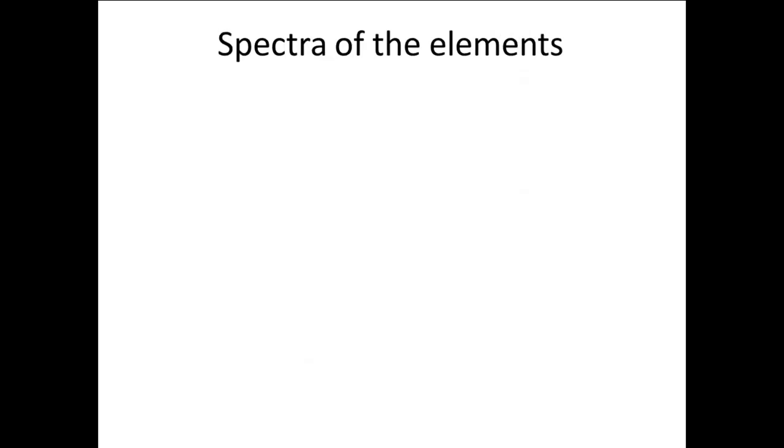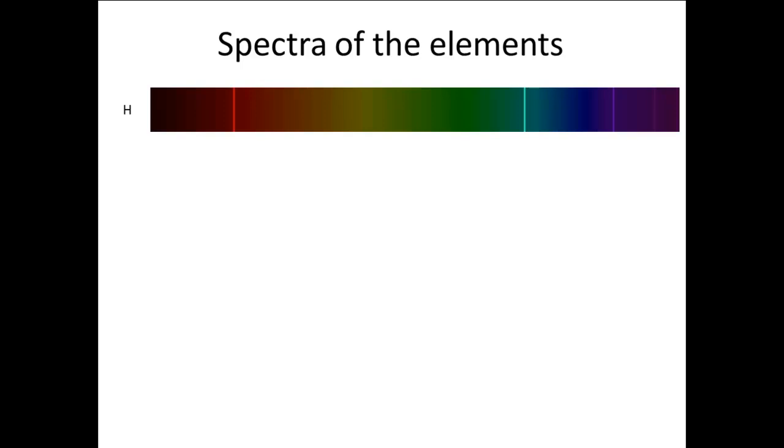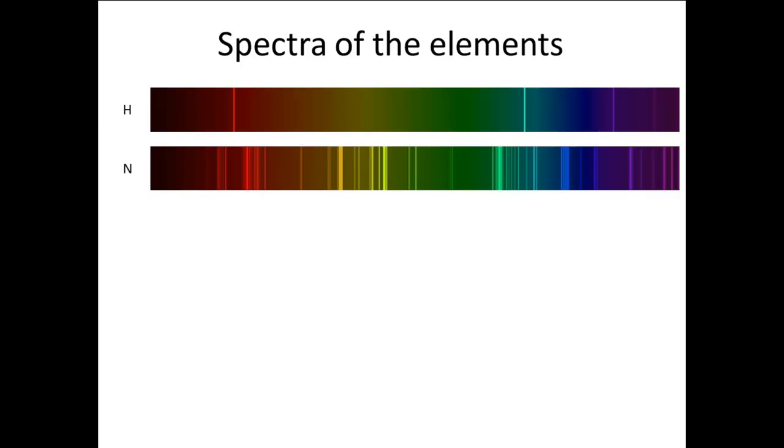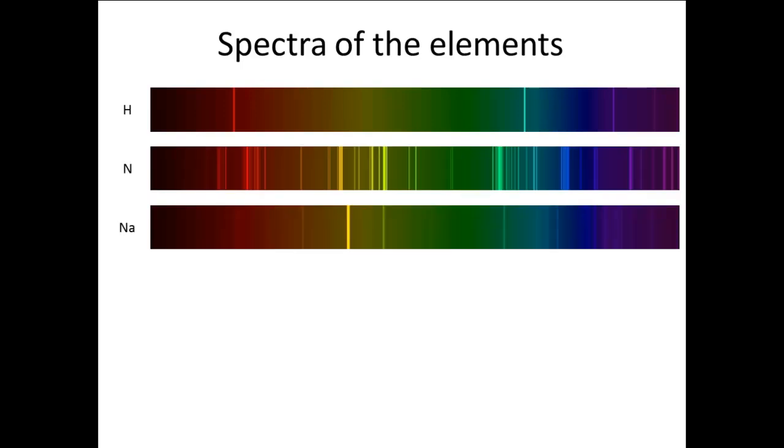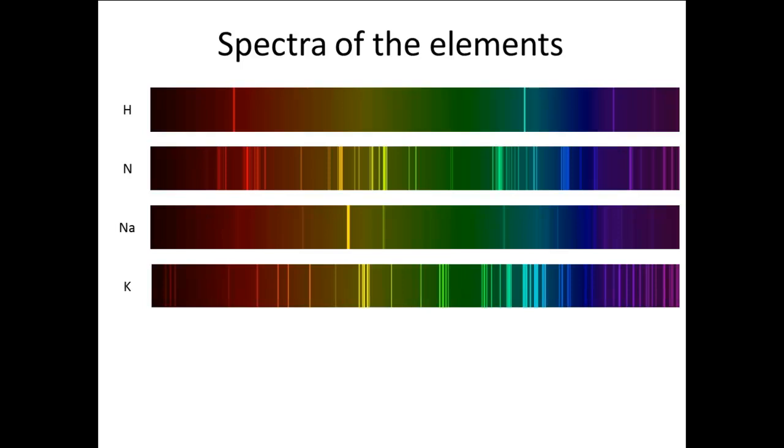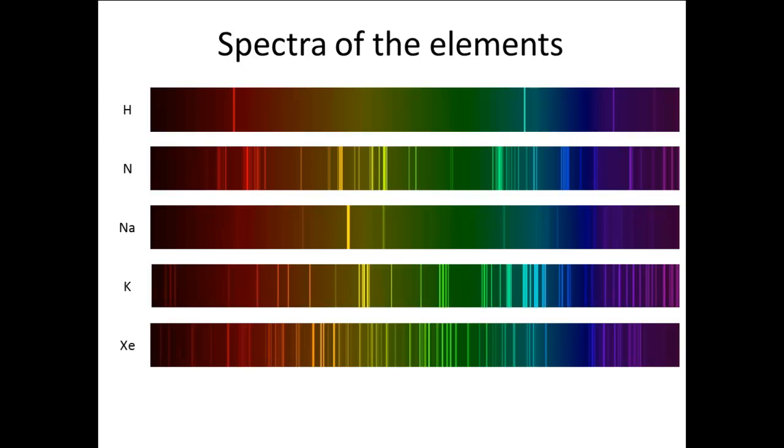Spectrum of each element is unique and elements can be identified by the spectrum. Here are the visible spectra of five elements: hydrogen, nitrogen, sodium, potassium, and xenon.